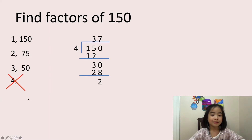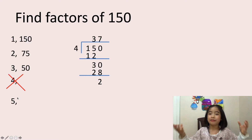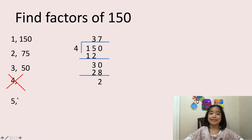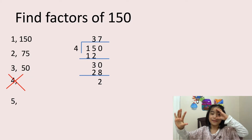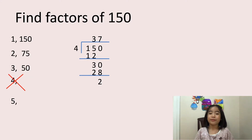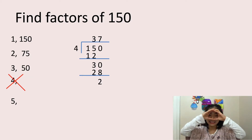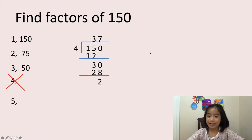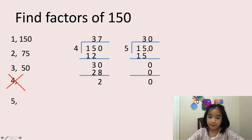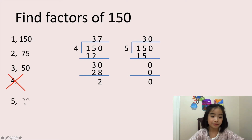Now let's move on to 5. We know that the rule is if the number ends in 0 or 5, it is divisible by 5. So 150 ends in a 0, so it is divisible by 5. I can verify: 150 divided by 5 equals 30. So let's write 30 here.